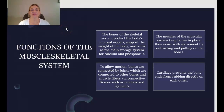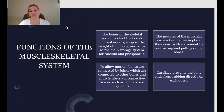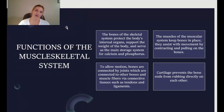Some functions of the musculoskeletal system include: the bones of the skeletal system help to protect the body's internal organs and support the weight of the body. It serves as the main storage system for calcium and phosphorus. The muscles keep bones in place and assist with movement by contracting and pulling on the bones. To allow motion, bones are connected by joints, which connect to muscle fibers via connective tissues such as tendons and ligaments. Cartilage prevents bone ends from rubbing directly on each other.